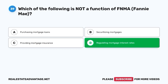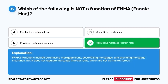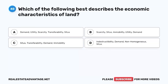Question 39. Which of the following is not a function of FNMA? D. Regulating mortgage interest rates. FNMA's functions include purchasing mortgage loans, securitizing mortgages, and providing mortgage insurance, but it does not regulate mortgage interest rates, which are set by market forces.